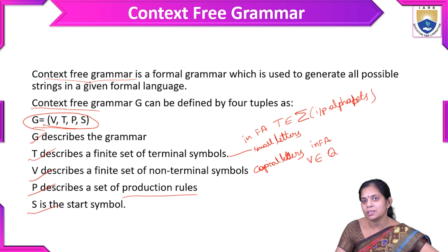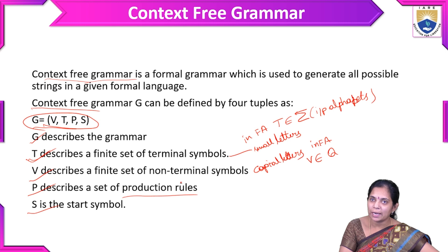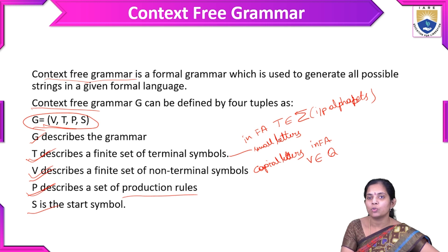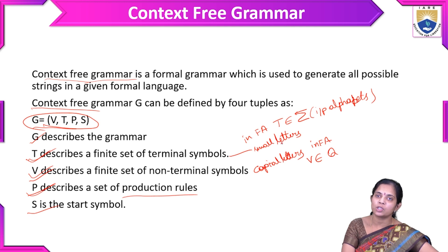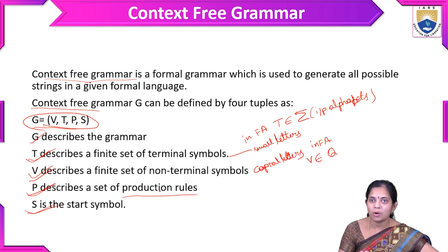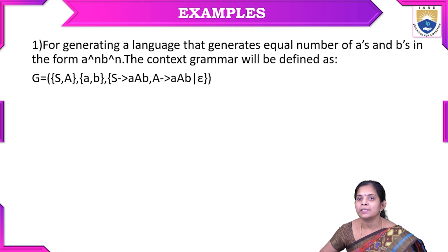These are the four-tuple belonging to context-free grammar. T is the terminal belonging to the input alphabets. V is the non-terminal set — non-terminals are a finite set of states in the finite automata. P is the production rules formed with terminal and non-terminal combinations, from which strings are formed. S is the start symbol.